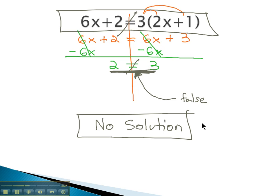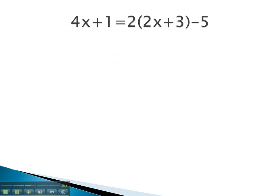Let's take a look at another example. Again, in this problem, we'll start by balancing through the equals, and then distributing through the parentheses. When we do, we get 4x plus 1 equals 2 times 2x is 4x, 2 times 3 is 6, minus 5.